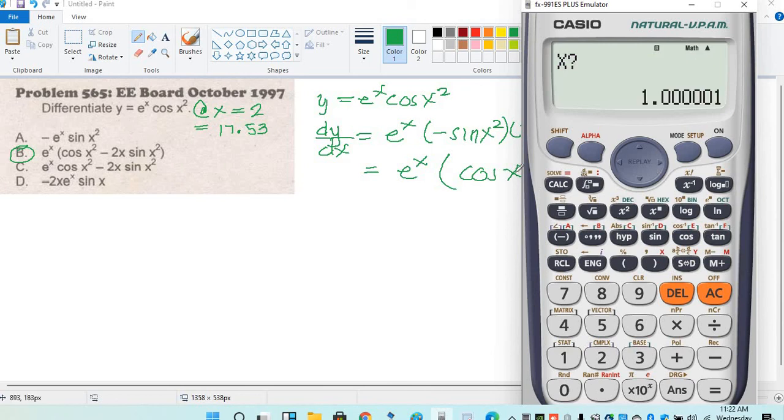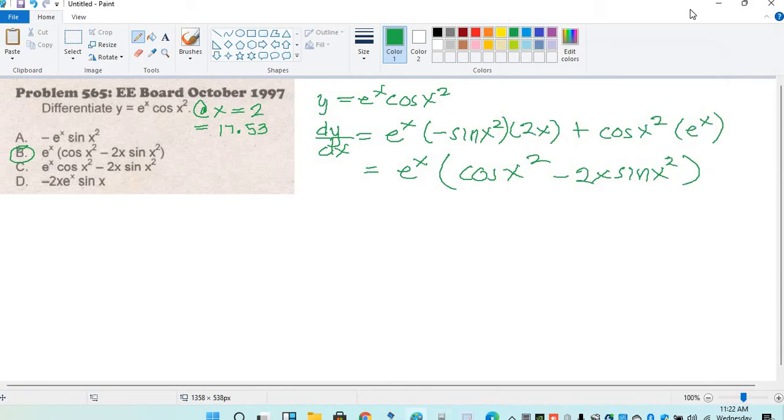So, kung ano yung ginamit natin dito sa problem, gagamitin natin din sa option. So, dapat pareho yung sa problem, saka yung sa option. So, 2 equals. So, 17.53. So, nag-17.53. So, pag nag-equal, ibig sabihin, yun na yung answer. So, yung iba, mali na to. Hindi yan mag-equal. So, pag hindi nag-equal, mali yun.